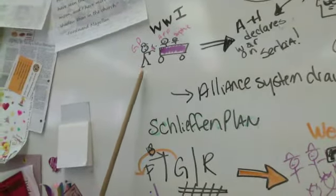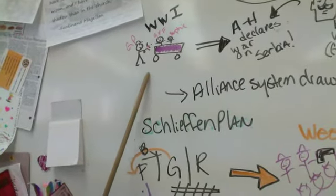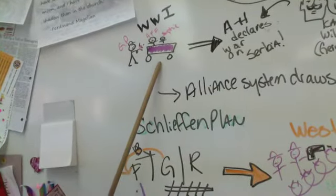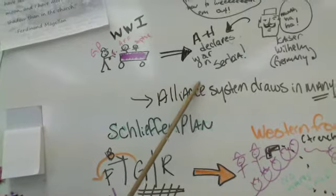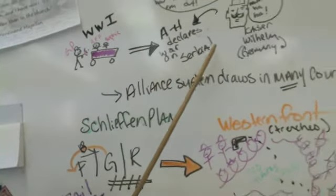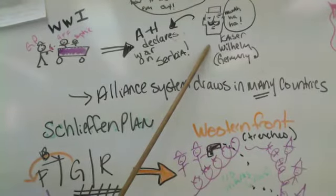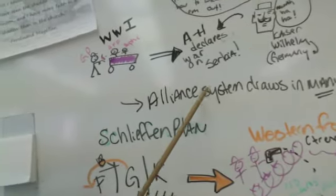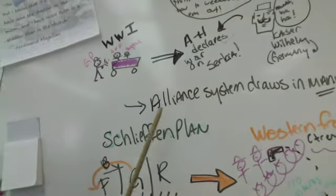Basically it starts when a Serbian guy, member of the Black Hand, Gavrilo Princip, assassinates Archduke Franz Ferdinand and his wife Sophie. As a result, Austria-Hungary declares war on Serbia. This had the support of Kaiser Wilhelm of Germany — if Austria-Hungary declared war, Germany had their back. Now the alliance system draws all these countries into the war.